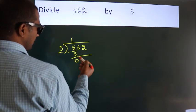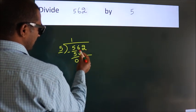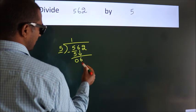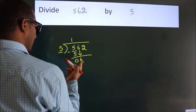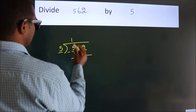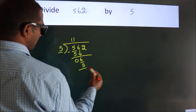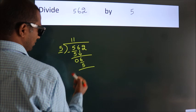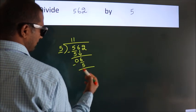After this, bring down the beside number. So 6 down. So 6. A number close to 6. In 5 table is 5 once, 5. Now we subtract. We get 1.